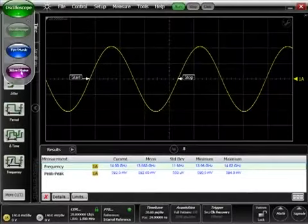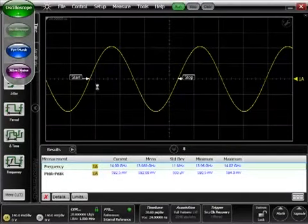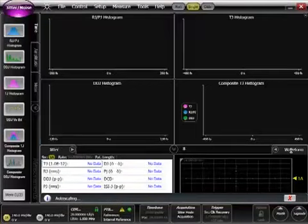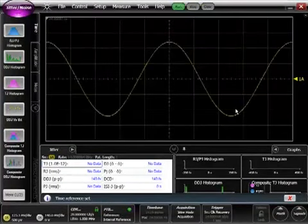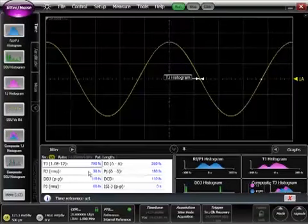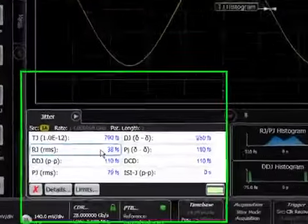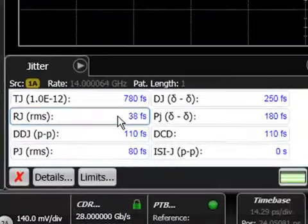With only one button push, we can switch into jitter mode and perform an in-depth analysis of the jitter on the incoming signal. The jitter mode automatically analyzes the data rate, the pattern length, and then separates the jitter into random and deterministic components.